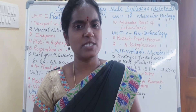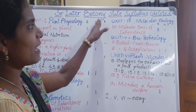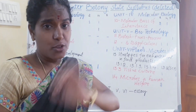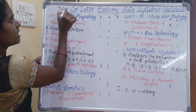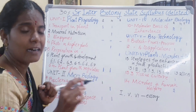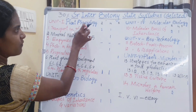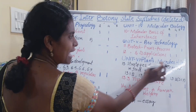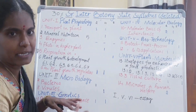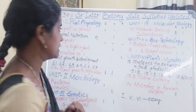Hi viewers, welcome to Trendy Achievers channel. Today we are going to discuss a very important concept: senior intermediate Telangana state botany deleted portion. You all know that from last year onwards, 30 percent of the portion has been deducted from the total syllabus. We are going to observe the 30 percent deleted portion of botany senior intermediate, second year, Telangana state botany syllabus.